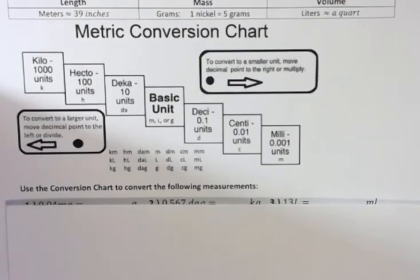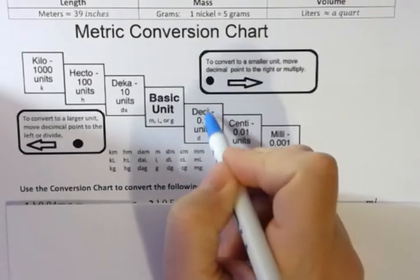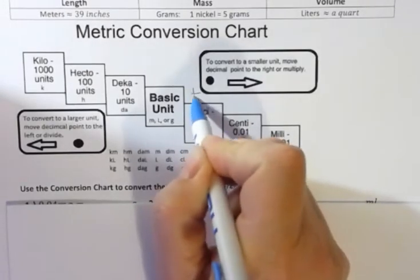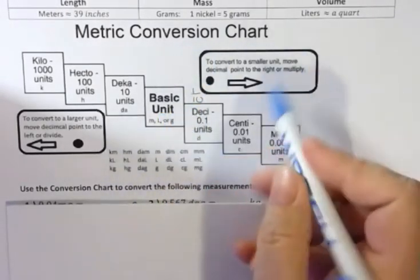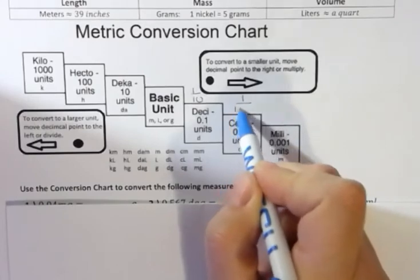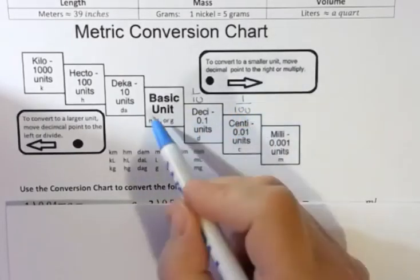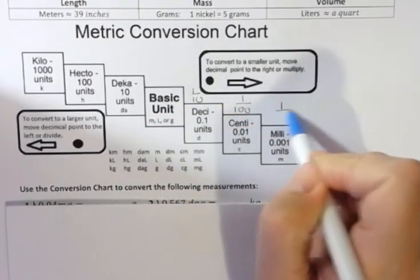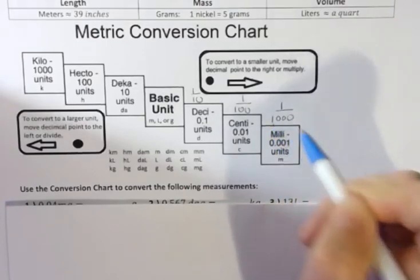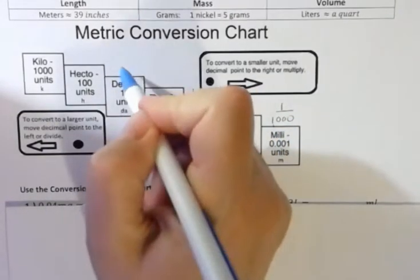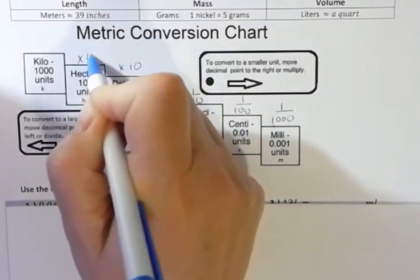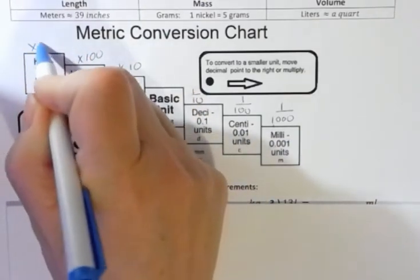We're always thinking about powers of ten: ten, one hundred, one thousand, or one-tenth, one-hundredth, one-thousandth. So a deci being one-tenth as large as the basic unit, a centi is one-hundredth the size of a basic unit, and a milli is one-thousandth the size. As you go the other way, it's times ten, times one hundred, times one thousand.